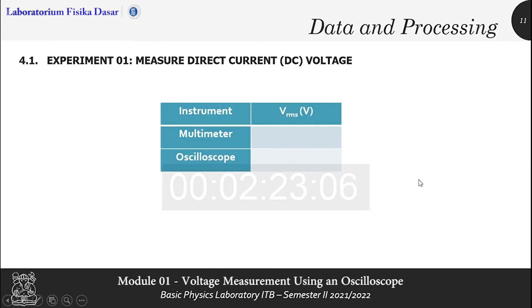Next, we go to the data and processing. For experiment 1, which is measurement direct current voltage. From experiment, you will get data of VRMS from multimeter and oscilloscope.